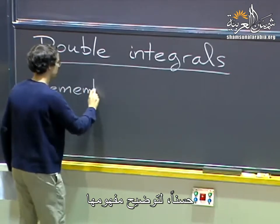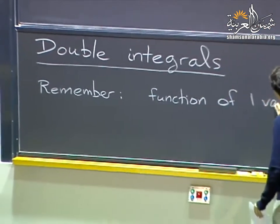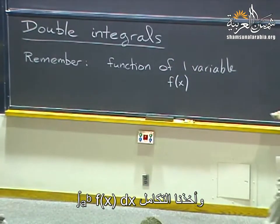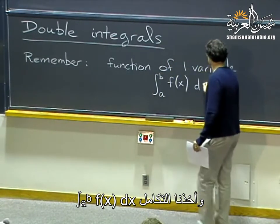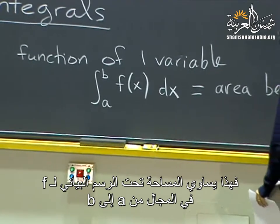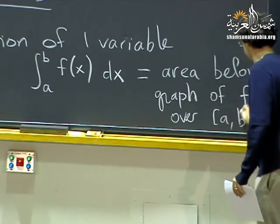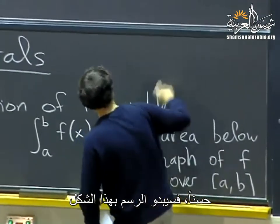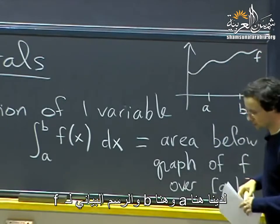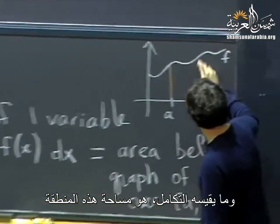Just to motivate the notion, let me remind you that when you have a function of one variable, say f of x, and you take its integral from a to b of f(x) dx, that corresponds to the area below the graph of f over the interval from a to b. So the picture is something like you have a, you have b, you have the graph of f, and the integral measures the area of this region.